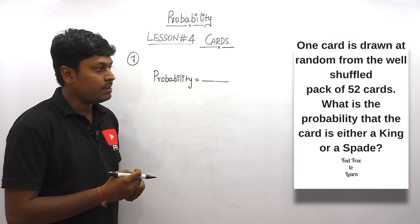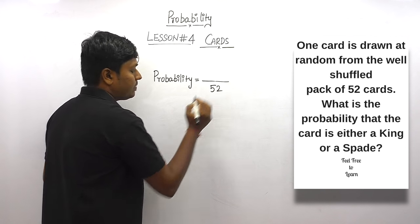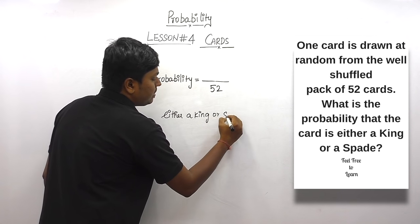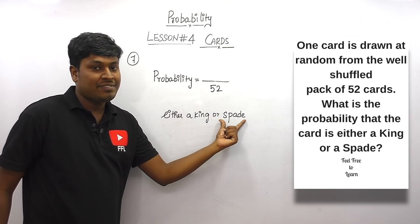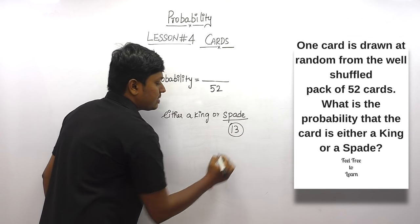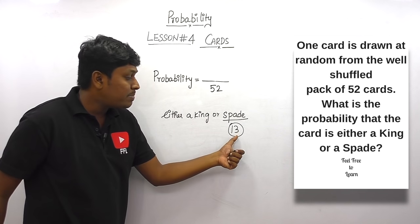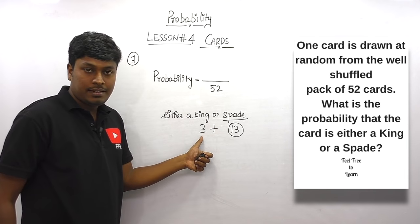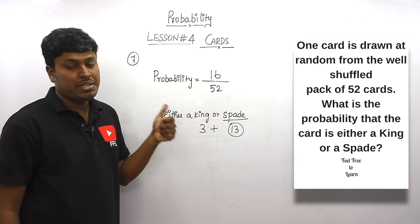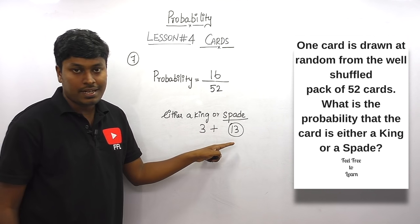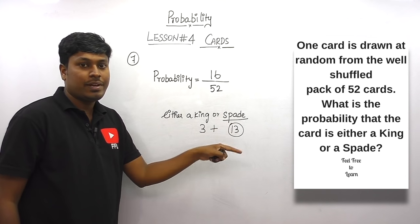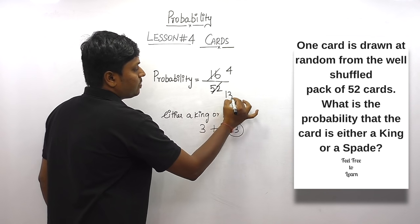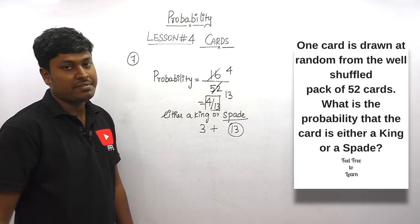Question number seven: one card is drawn at random from a well-shuffled pack of 52 cards. What is the probability that the card is either a king or a spade? Total possibility is 52. In spade we have 13 cards. There are 4 kings, but spade already contains one king, so remaining kings are 3. Therefore 13 plus 3 = 16, and 16 divided by 52 = 4/13.